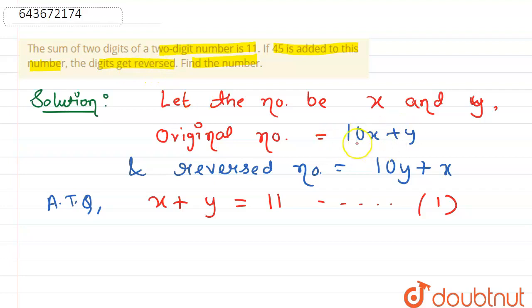If 45 is added to this number, that means 10x plus y plus 45, then the digits get reversed. So this is equals to 10y plus x.